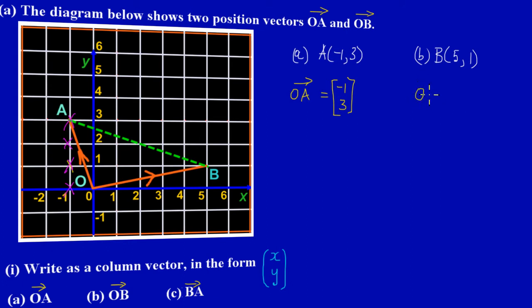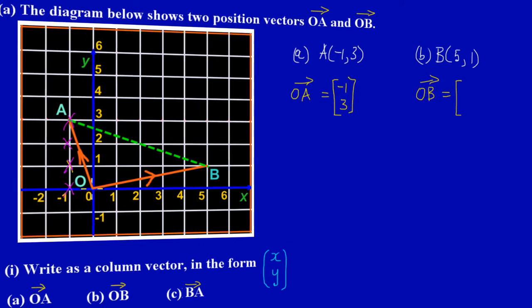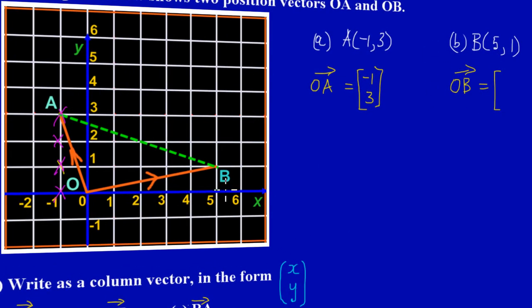Now for OB, starting at the origin and moving to the right to reach B, I move five places on the x-axis, so my x value is five. Point B is just one above the x-axis, so my y value is one. The vector OB is (5, 1) — the same as the coordinate for point B: x is five, y is one.